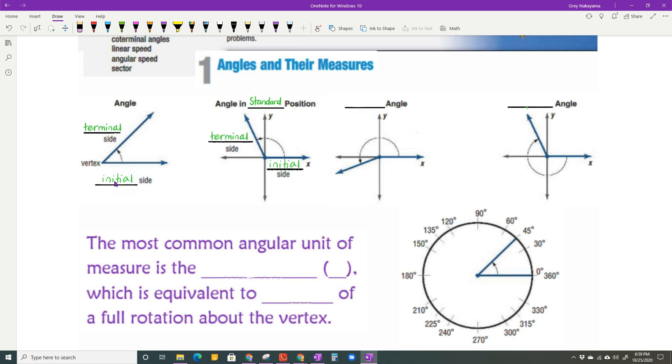And every angle that we measure can either be positive or negative, and that tells you the direction, just like we talk about numbers on a number line. If the angle is positive, then we know that it is rotating in a counterclockwise motion, and if it is negative, then it is rotating in a clockwise motion.